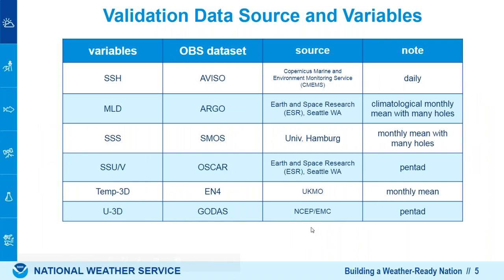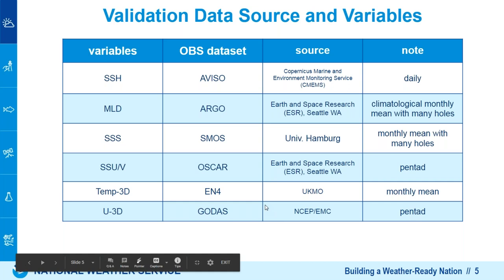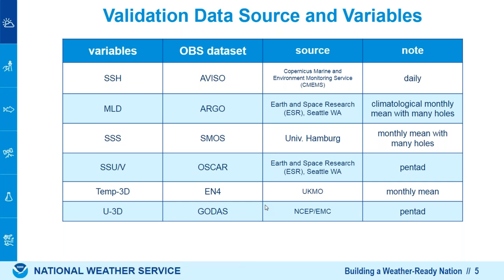Ocean validation is a challenge compared with the atmospheric part, where you have comprehensive observation data and mature enough reanalyses to define clear metrics. For ocean validation, the data sources I use include: sea surface height from altimetry data, mixed layer depth from Argo, surface salinity from SMOS, currents from OSCAR, 3D temperature from UK MetOffice EN4, and zonal currents in 3D from CODAS. For fair comparison, every figure is based on January, April, July, and October monthly averages.